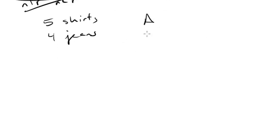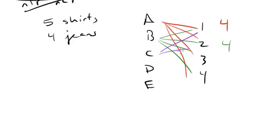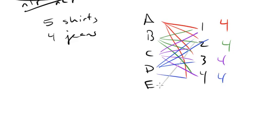Let's say we had shirt A, shirt B, shirt C, shirt D, shirt E, and then jeans one through four. Shirt A can be paired with one, two, three, or four — that's four different outfits. Similarly, B could be paired with one, two, three, or four — another four outfits. C, D, and E each give another four outfits. So total outfits is five fours — four plus four plus four plus four plus four — that's just 20.